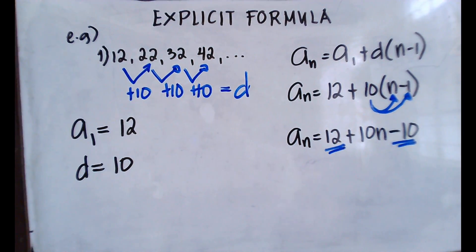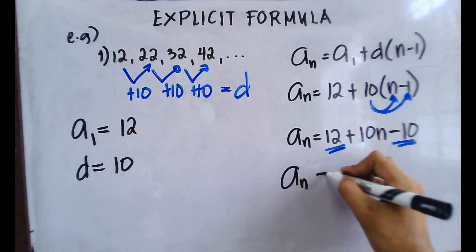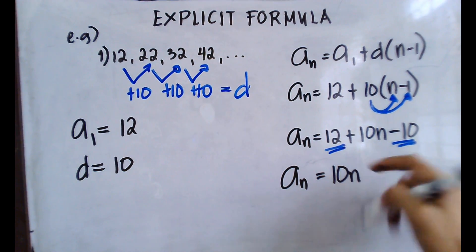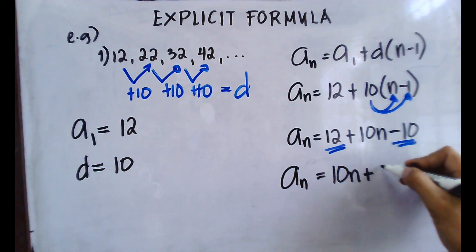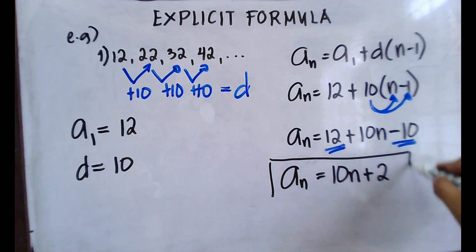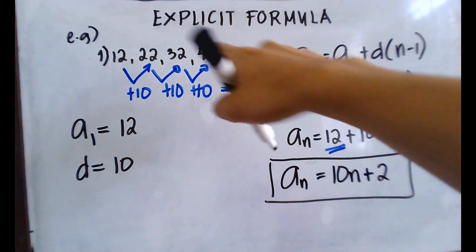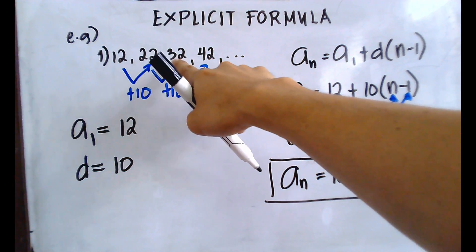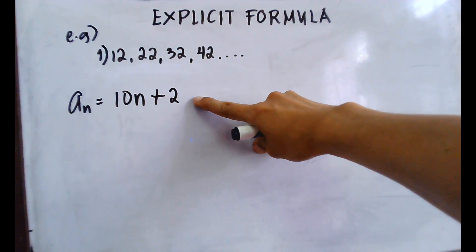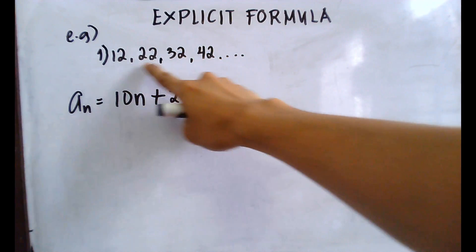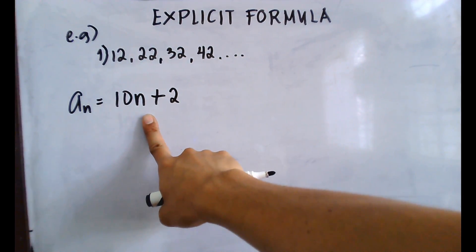The final simplified explicit formula is: a sub n equals 10n plus 2. This is the explicit formula for the sequence 12, 22, 32, 42, and so on.